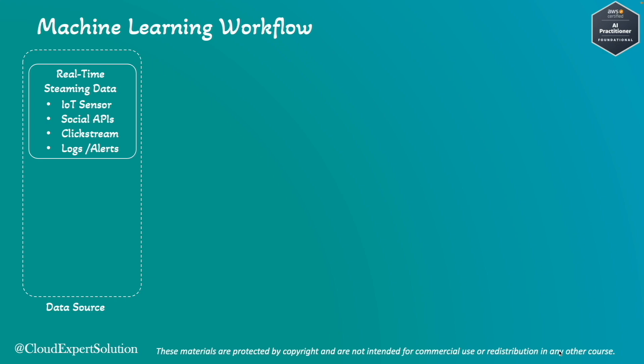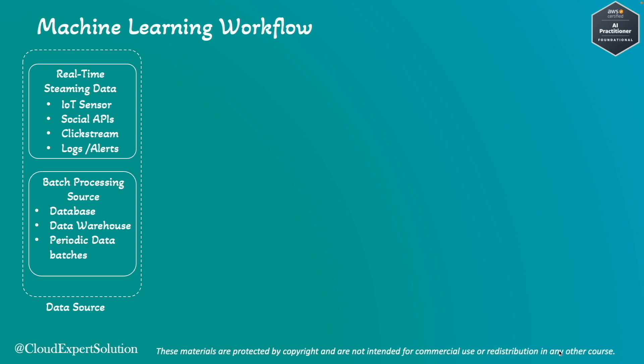Real-time sources could also include website clickstream data, network security logs, or security alerts. On the other hand, we can have batch processing data sources. Examples include enterprise data warehouses with structured data from platforms like Amazon Redshift, historical transactional data from an e-commerce platform spanning more than five years, or medical and health records from government institutes, public data sources, or EHR systems.